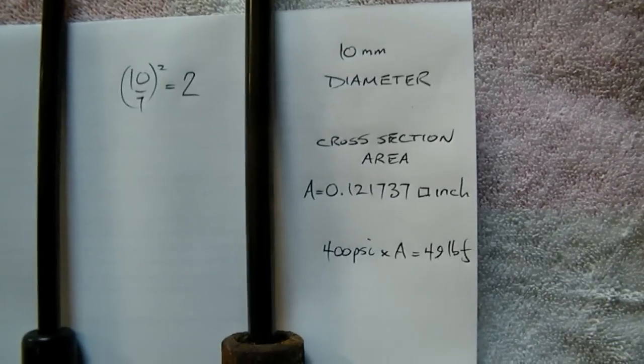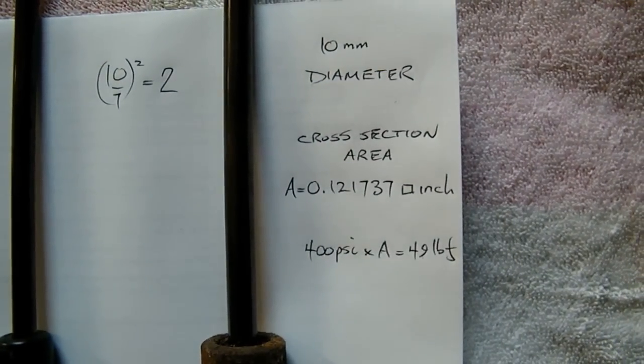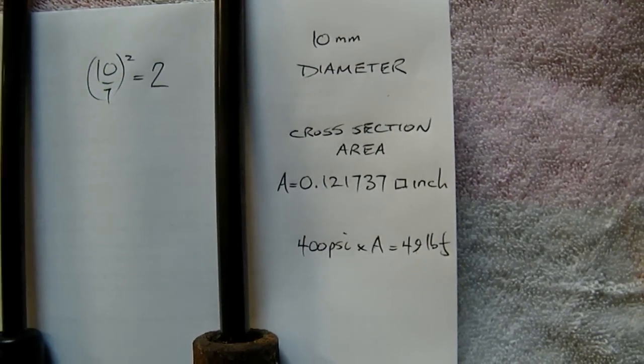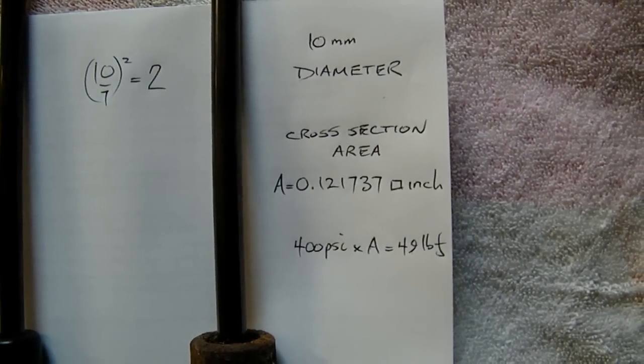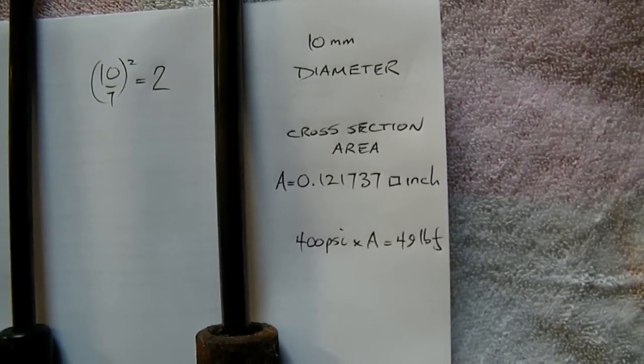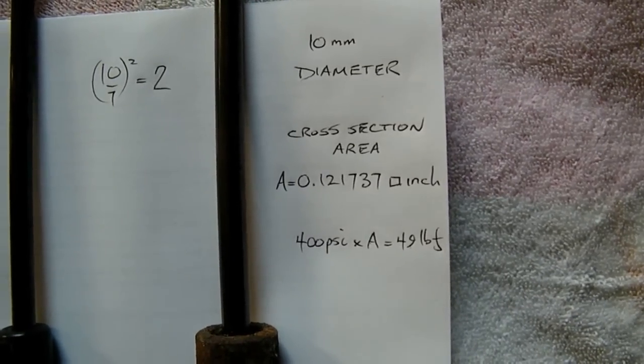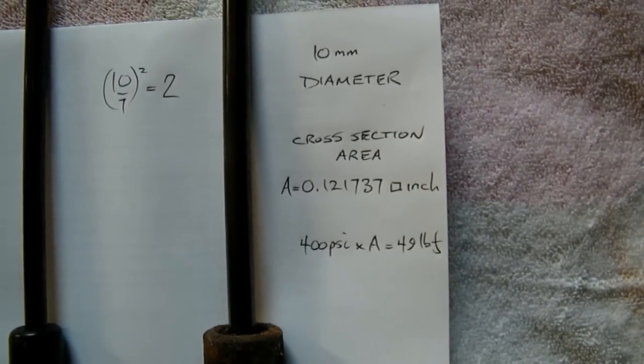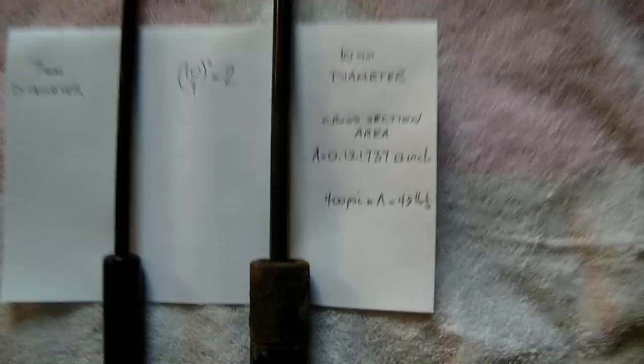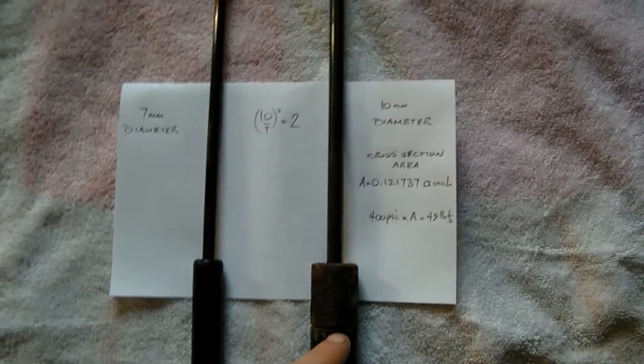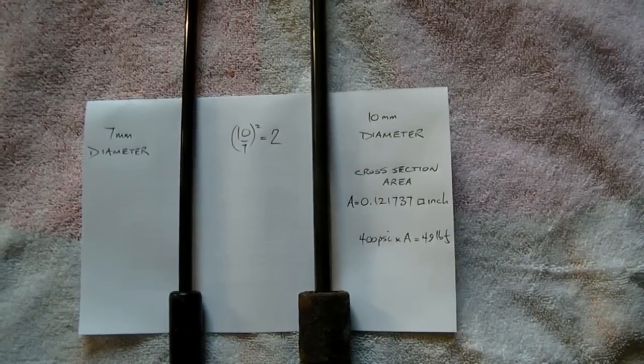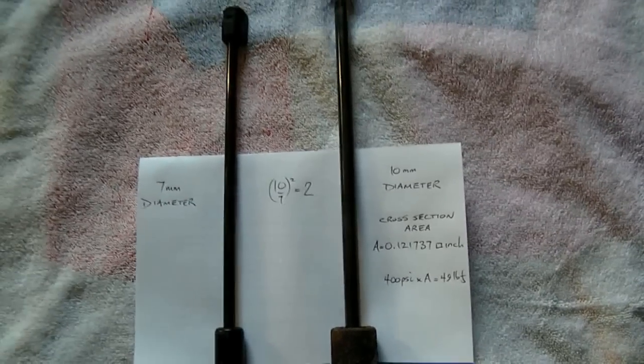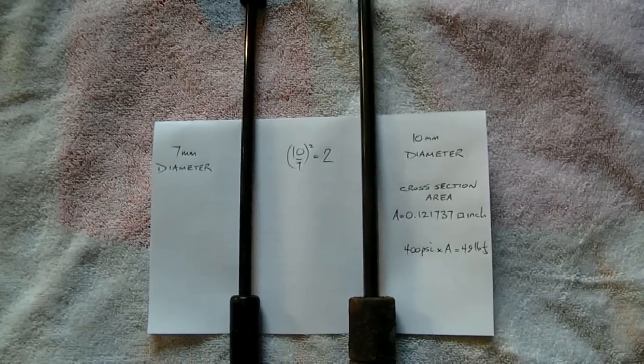So the cross sectional area of the minivan arm is about 0.12 square inches. So for my little 400 psi pump the maximum lifting force that I could charge the minivan strut to is only 49 pounds force which is not enough for any minivan.